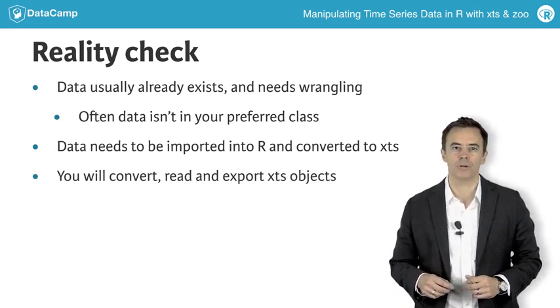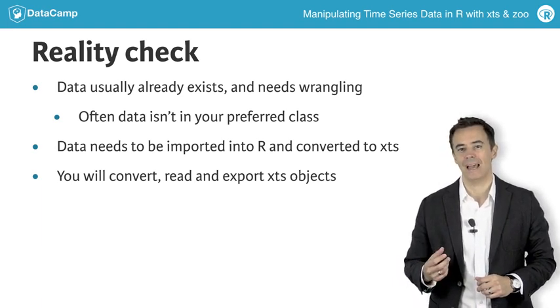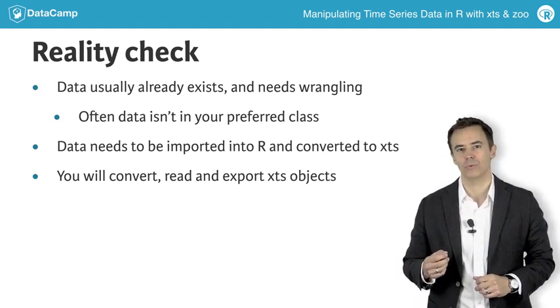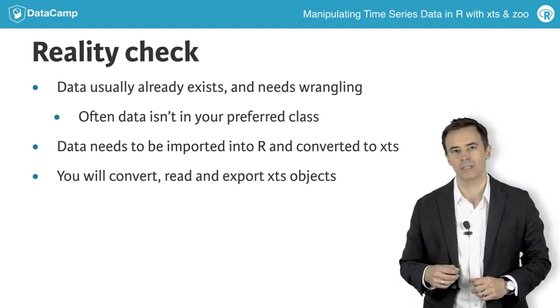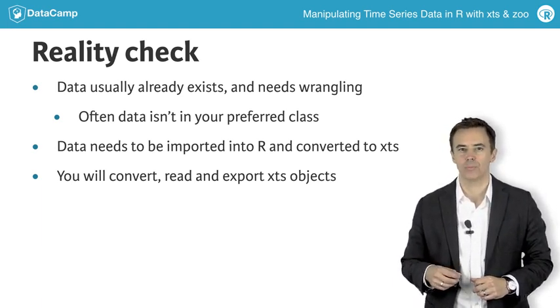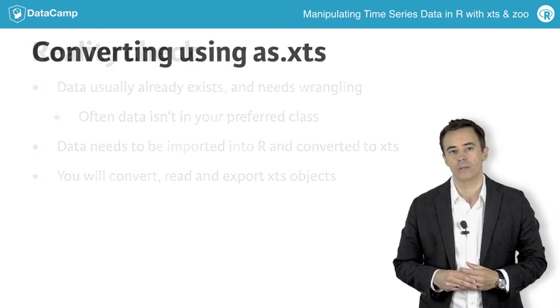In this chapter, we'll look at converting types using XTS, reading data into R as an XTS object, as well as exporting XTS objects from R for other uses.